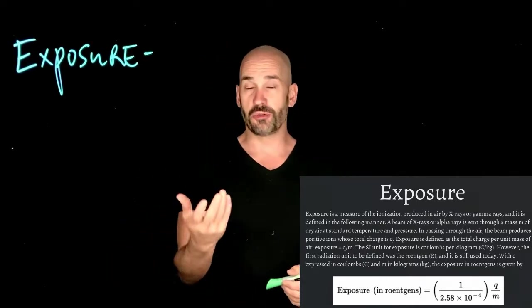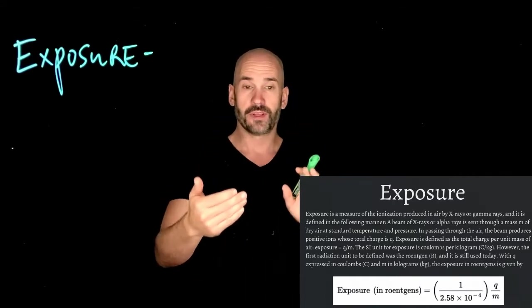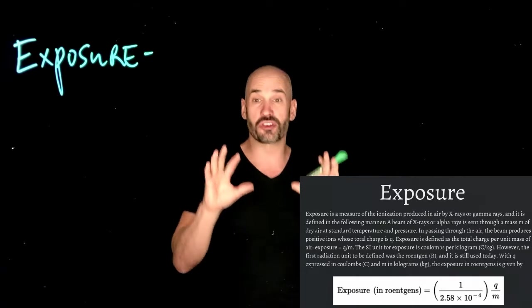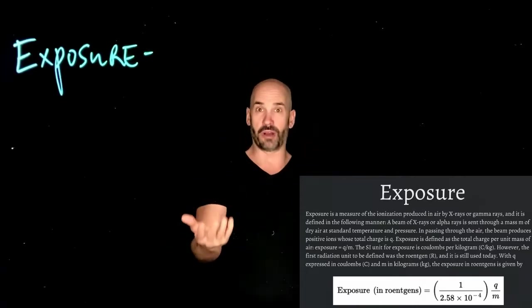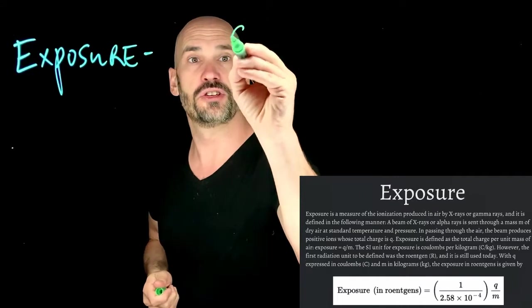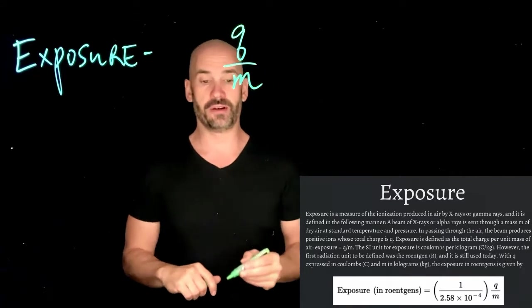How much charge do I get per unit mass of that air? The more intense the radiation, the more ions, the more charge per kilogram of air. So really exposure is just Q over M, the charge over the mass of the air.